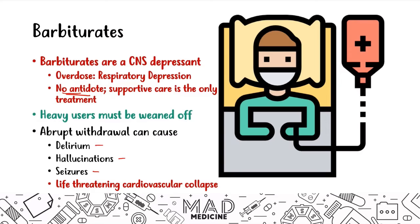For Step 1, a barbiturate vignette may present a patient who comes in very depressed in terms of autonomic and CNS function — they may be delirious, having seizures, or hallucinating if they're withdrawing. If they took barbiturates with alcohol, they'll have a deeply depressed CNS, may not wake up, and could go into respiratory depression.